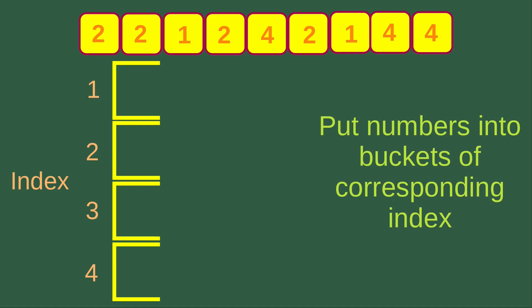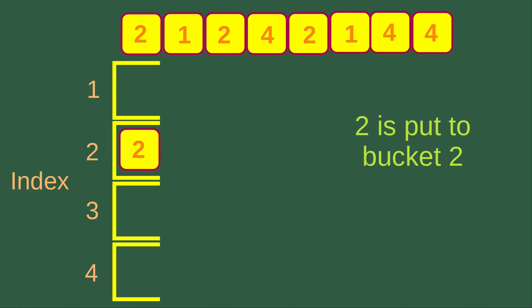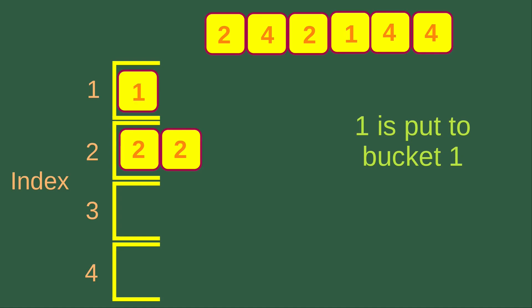Now I'm going to put the first number in the unsorted list into the index two bucket — so two is put into bucket two. The second number is also two, so the second two goes into the index two bucket. The third number is one — I put it into index one, and it becomes the first element in that bucket. Now I put another two into bucket two, so there are now three twos in bucket two.